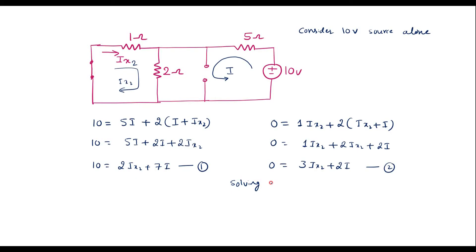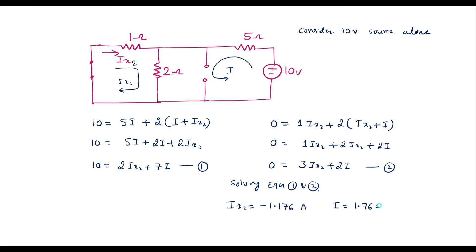Solving equations 1 and 2 — we can solve these two equations directly using a calculator in equation mode with two unknowns. Solving, we get Ix2 equals minus 1.176 amps and I equals 1.764 amps. We are interested in Ix2, so the current through the 1 ohm resistor considering the 10 volt source alone is minus 1.176 amps.